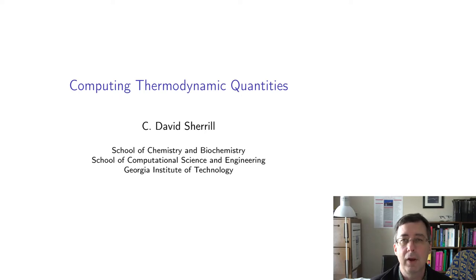Hi everybody. Today our topic is computing thermodynamic properties with quantum chemistry. Thermodynamic properties like the Gibbs free energy G, the enthalpy H, or the entropy S are really central quantities in chemistry. It's very often that we want to compute a delta G of reaction or a delta H of reaction, and so how would you actually get those out of quantum chemistry calculations?